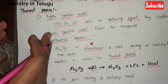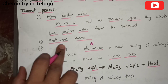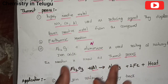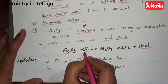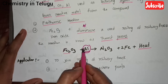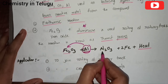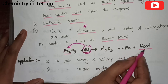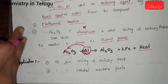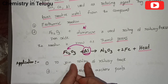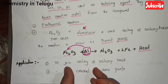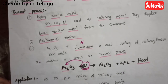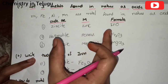In the thermite process, highly reactive metals displace low reactive metals. This exothermic process uses Fe2O3 and aluminum. Since aluminum is highly reactive, it replaces iron from the compound. The application is to join railway tracks by filling gaps between them.